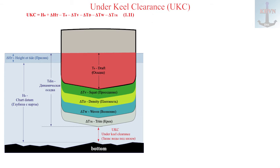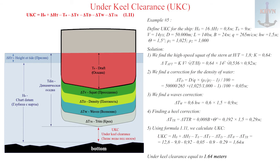Example number 5 shows step by step how UKC is calculated for a vessel with the following characteristics shown on the screen. Step 1: we find the high-speed squat of the stern, approximately equal to 0.92 meters. Step 2: we find the correction for the density of water. Step 3: we find the wave correction, equal to 0.9 meters. Step 4: finding the heel correction, equal to 0.29 meters. Step 5: using formula 1.11, we calculate UKC. Under keel clearance equals 1.64 meters.